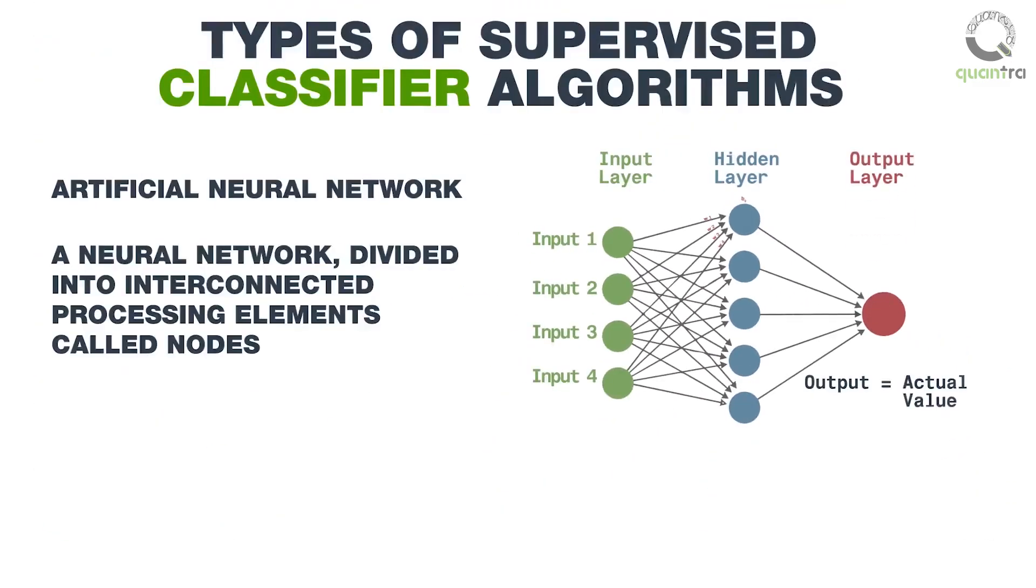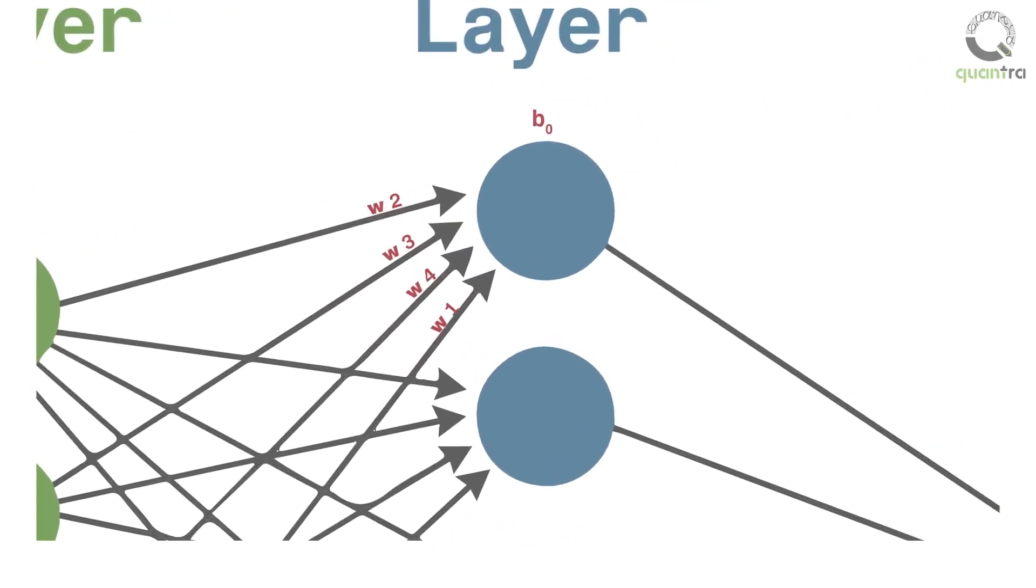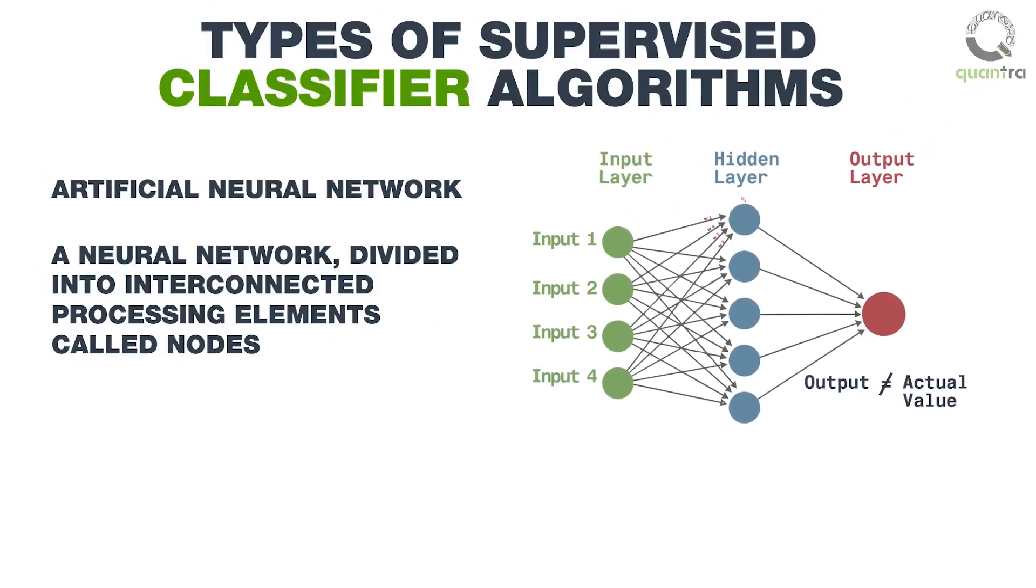The output is then matched to the actual value to verify the process. If the output matches and there is no error element, then it is good to go. Otherwise, back propagation is used. This includes adjusting the connection weights based on the error. The set of input samples are presented to the network repeatedly until the error is minimized and the network is optimized.